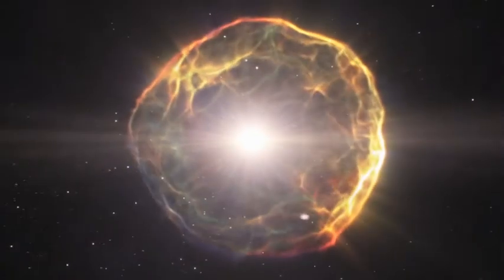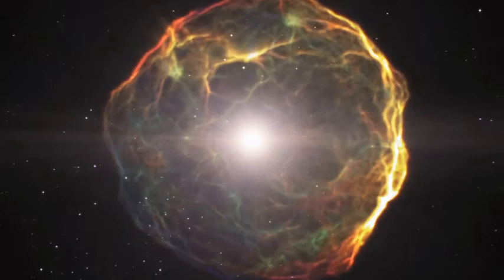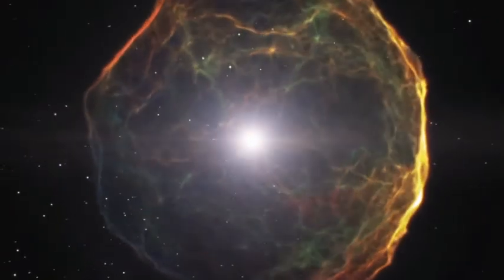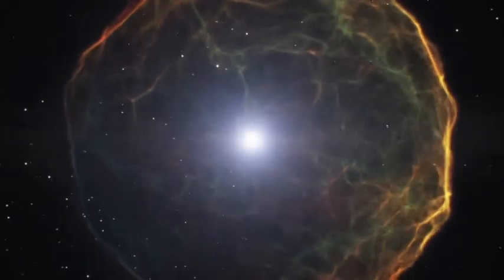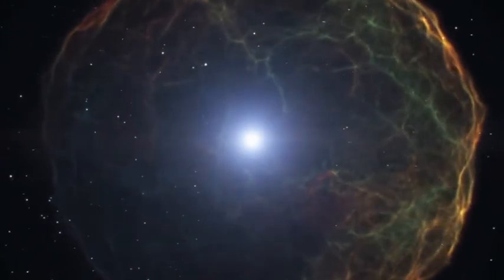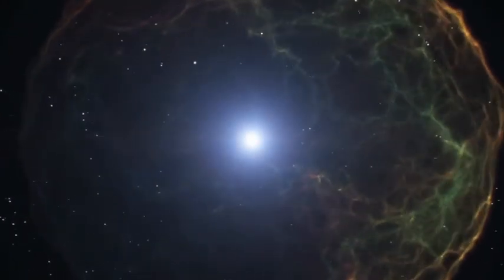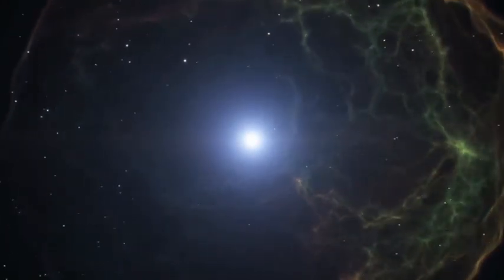The shockwave from the supernova is absorbed by the star's outer shells of gas and dust, which escaped from the star before the explosion. It heats the gas so that it gives off X-ray radiation, which astronomers can photograph using special telescopes in space.